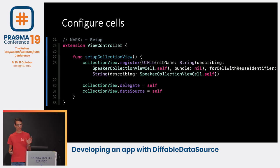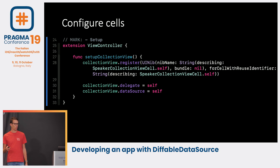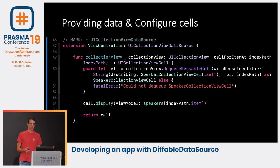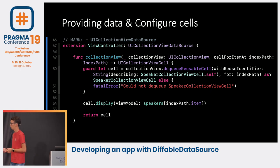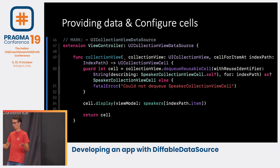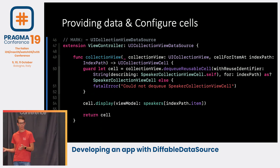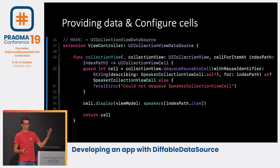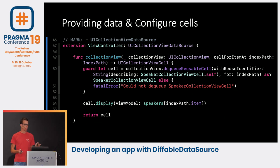Next up, we're going to set our delegate and our data source. In our cellForRow, we'll dequeue our cell, cast it to our SpeakerCell, and if we cannot find it we'll fatal error because we made a huge mistake — this shouldn't happen in production. Next, we're going to fetch our speaker from our speakers array, call our cell display method, and return our cell.